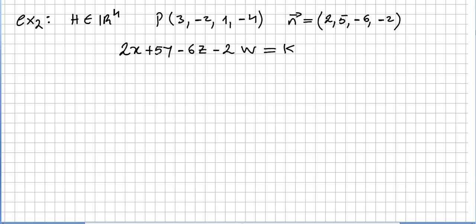So very easy, right? 2x + 5y - 6z - 2w, four components, we are in R^4, equals k, a given constant. Now we want the point to be on the plane, so we replace the point.